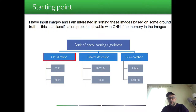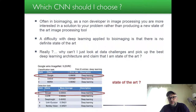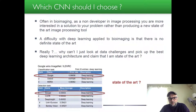Which convolutional neural network should you choose? Often in bioimaging, as a non-developer in image processing, you are more interested in a solution to your problem rather than producing a new state-of-the-art image processing tool. The difficulty with deep learning applied to bioimaging is that there is no definitive state of the art.